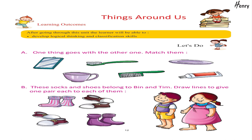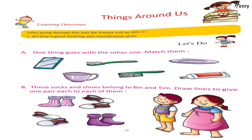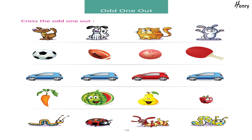Things around us. Learning outcomes: after going through this unit, the learner will be able to develop logical thinking and classification skills. Let's do: one thing goes with the other one — match them. These socks and shoes belong to Bin and Tim; draw lines to give one pair each. Cross the odd one out.